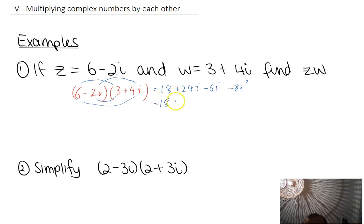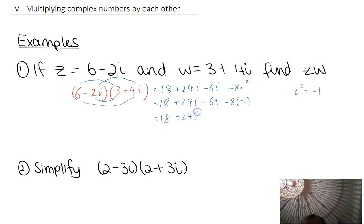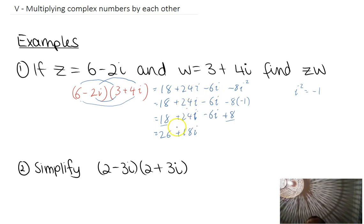What do we know? We know that i squared is equal to negative 1. So this is actually negative 8 times negative 1. This always happens when you do complex numbers, because you've got the i there and the i there — we get the reverse of whatever that is. We don't get negative 8; we get positive 8. So: 18 plus 24i minus 6i, and negative 8 times negative 1 is positive 8. Then group your like terms: 18 plus 8 is 26, and 24i minus 6i is positive 18i. That's what happens when you multiply two complex numbers.